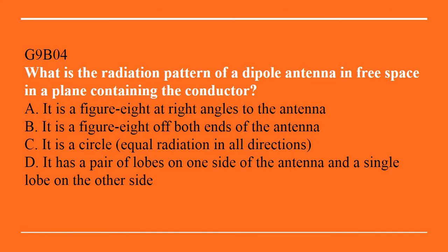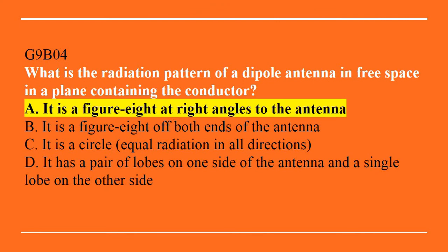G9B04: What is the radiation pattern of a dipole antenna in free space in a plane containing the conductor? A. It is a figure-8 at right angles to the antenna. B. It is a figure-8 off both ends of the antenna. C. It is a circle — equal radiation in all directions. Or D. It has a pair of lobes on one side of the antenna and a single lobe on the other side. The answer is A — it is a figure-8 at right angles to the antenna.